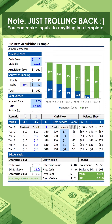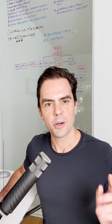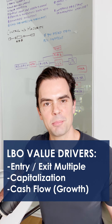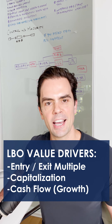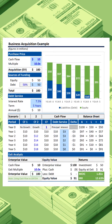So the primary value drivers are purchase price, capitalization, cash flow, and your exit multiple. And yes, interest expense is included in capitalization, but the point of the exercise is to try and illustrate what moves the needle the most.